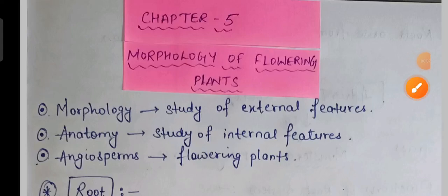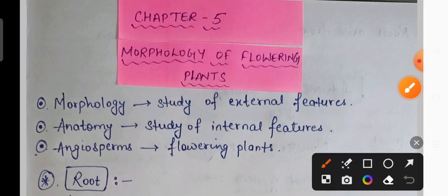Hello everyone and welcome back to our channel Biology Impulse. During this session we are going to talk about Chapter 5 of Class 11th, that is Morphology in Flowering Plants. So without wasting any time, let's proceed with today's session. Before we study, let's cover some basic terms. The first term is morphology — morphology means study of external features.